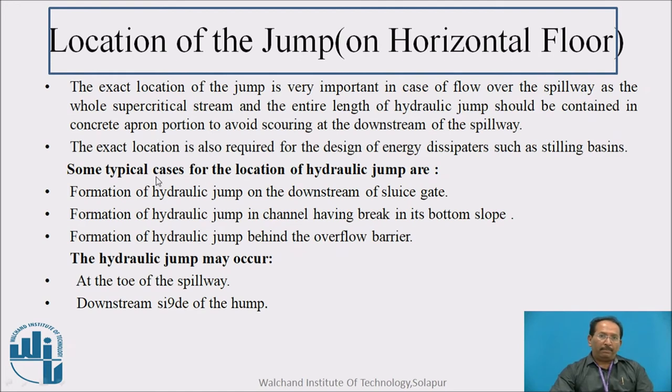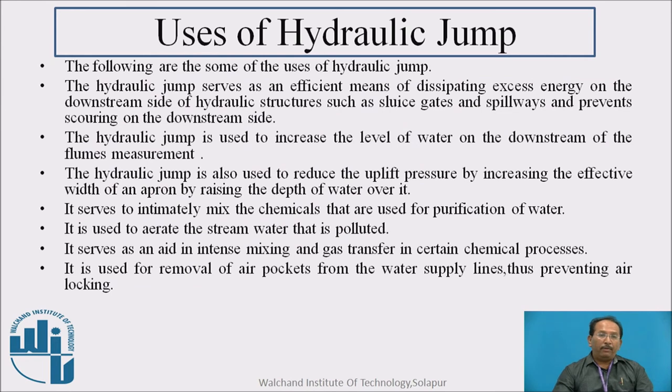The location of the jump, these are some locations. The exact location of the jump is very important to know or to design for the spillway. Formation of hydraulic jump on the downstream side of the sluice gate, formation of the hydraulic jump in the channel having break in its bottom slope, and formation of hydraulic jump behind overflow of the barrier. The hydraulic jump may also occur at the toe of the spillway, that is at the end of the spillway, and downstream side of the hump, that is elevated portion.